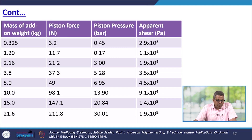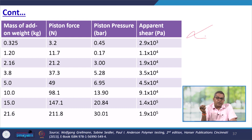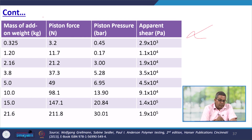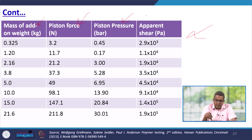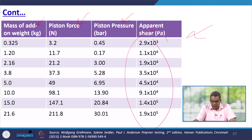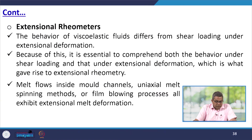The melt flow indexer measures viscosity at a relatively low shear rate — it is only one value and cannot be directly compared to viscosity readings from a high pressure capillary rheometer. A table lists the add-on weight mass, piston force applied, piston pressure, and the calculated apparent shear rate for the equipment.